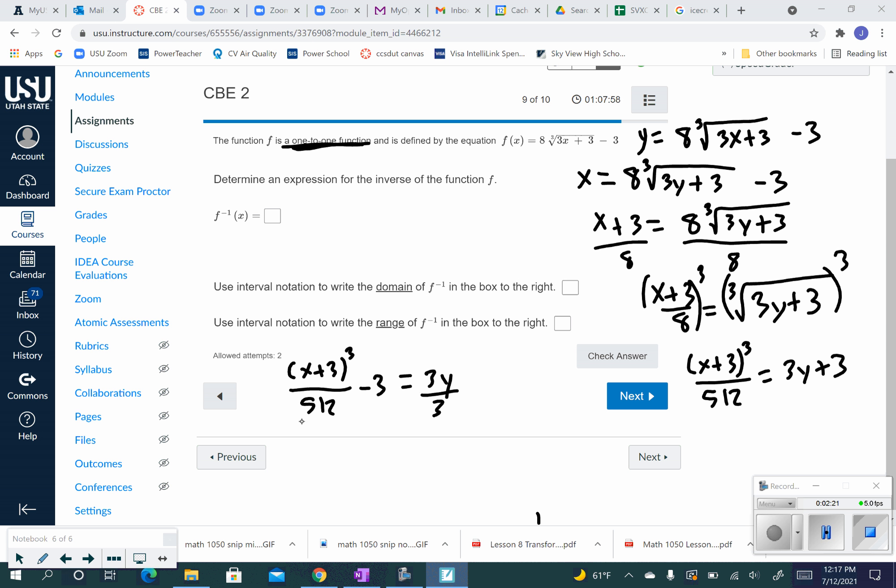Now when I divide by 3, I'm going to divide each of these by 3. When you divide by 3 over here, the 3 just goes in the bottom. Divide that by 3. So we're going to go 3 times 512. So we end up with x plus 3 cubed over, and 3 times 512 is 1536. 3 divided by 3 is 1. And that's what y equals, or that's the inverse of f of x.